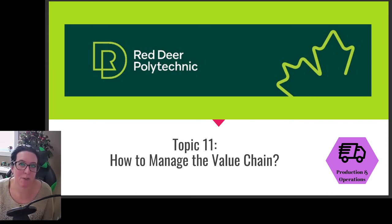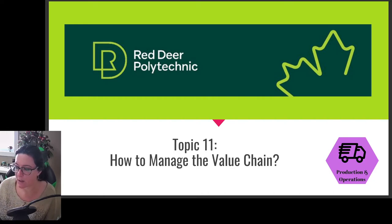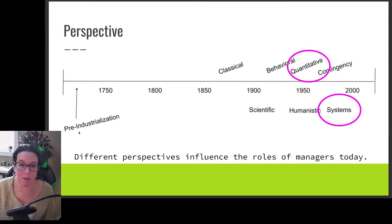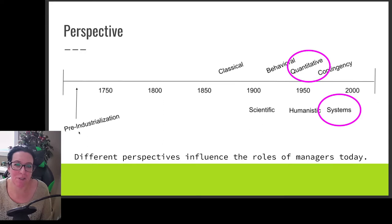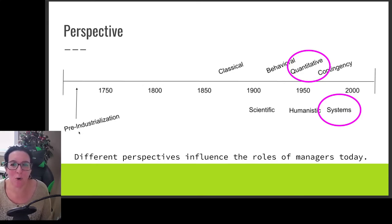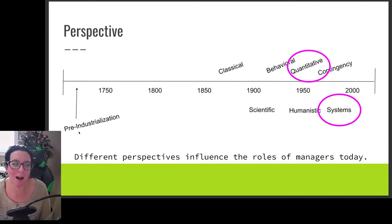We're continuing our discussion about different areas of management by looking at managing the value chain. As we move through the history of management, we are in the more quantitative stage, where computers allow us to analyze data, leading us into quality and efficiency measures. We're looking at a more systems approach — a holistic view of our operations, not just how we make things, but how our processes tie to everything else.